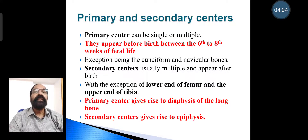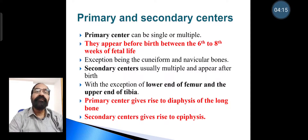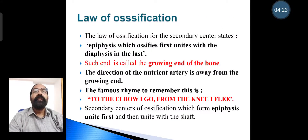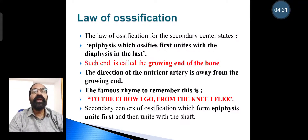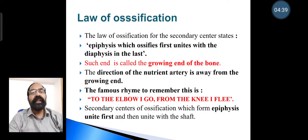Secondary centers are usually multiple and appear after birth, with the exception of the lower end of the femur and the upper end of the tibia. Primary centers give rise to the diaphysis of a long bone, while secondary centers give rise to the epiphysis. The law of ossification for secondary centers states that the epiphysis which ossifies first unites with the diaphysis last. Such an end is called the growing end of the bone, and the direction of the nutrient artery is away from the growing end.